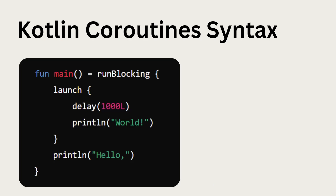Now let's take a look at the syntax for using coroutines. In this example, we use runBlocking to start a coroutine scope. Inside this scope, we launch a new coroutine with the launch block, which prints a word after a one second delay. Meanwhile, hello is printed immediately at the beginning. This simple example shows how coroutines can run code concurrently without blocking the main thread. When writing something like a hello world in a blank project, everything runs in the main thread. So by using coroutines, we can execute two tasks at the same time without blocking the main thread.